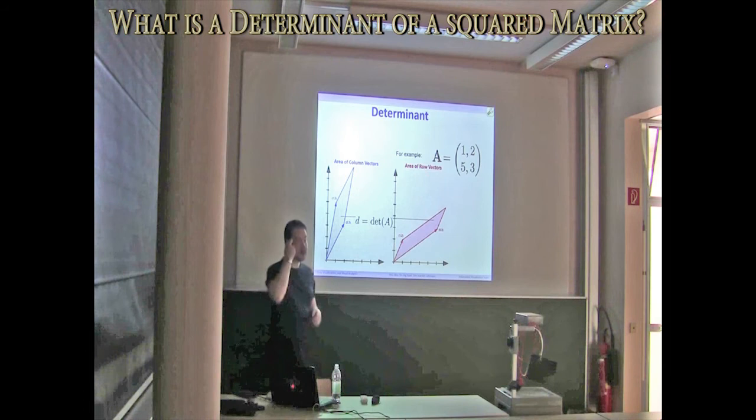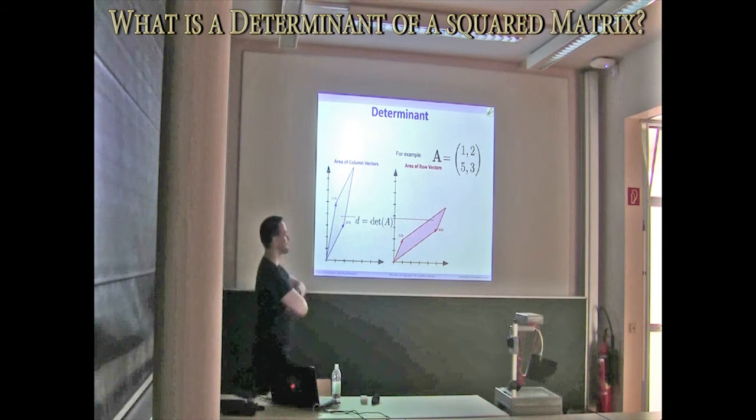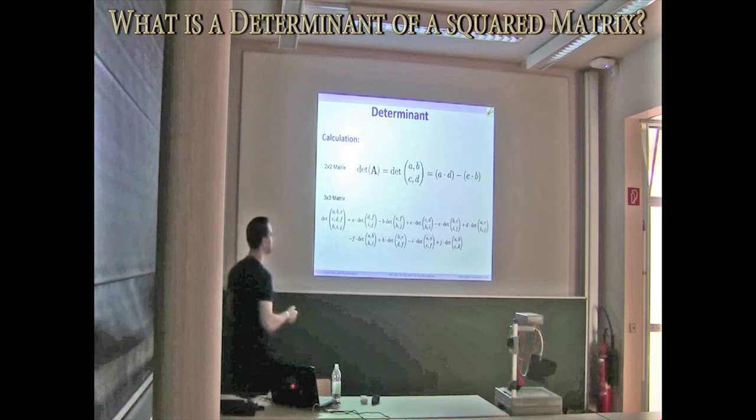And for such a nice matrix, how do we compute the determinant? A diagonal, I mean, it's the other diagonal. Exactly.